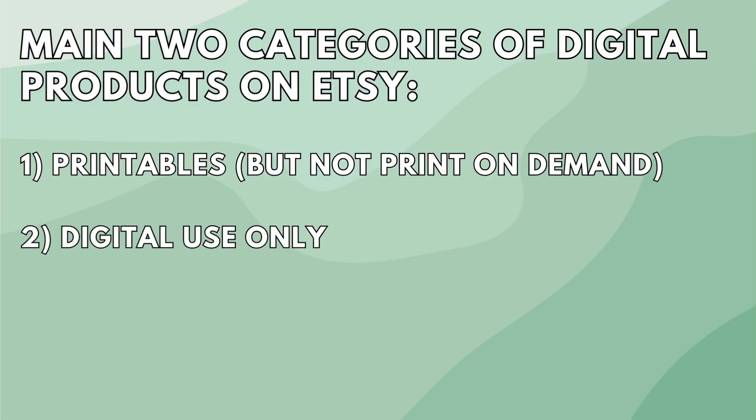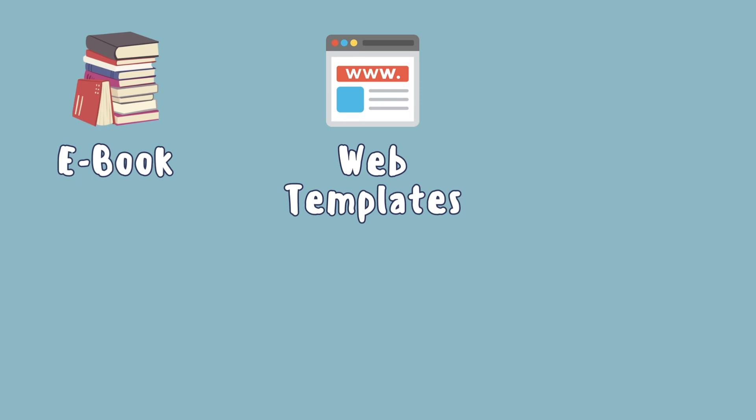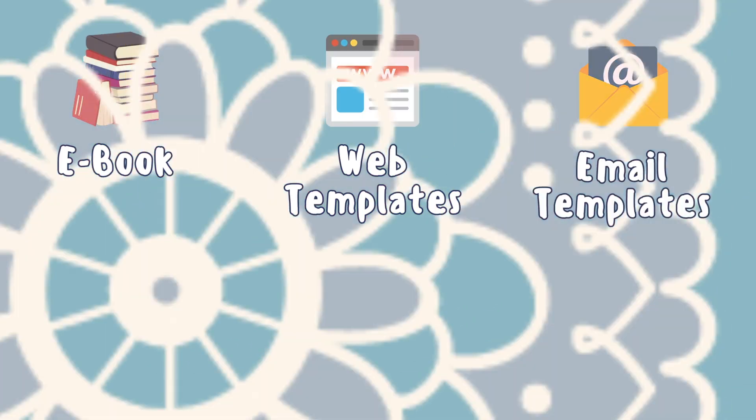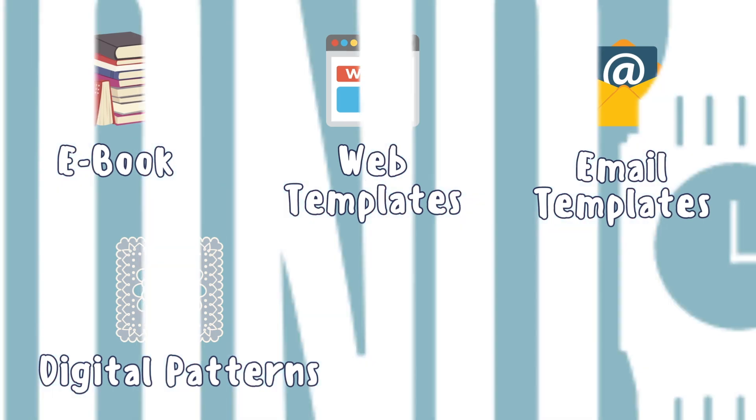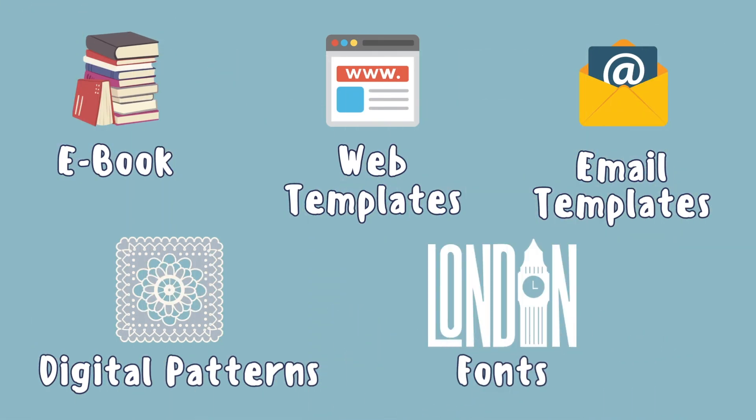The second category of digital products are items purely for digital use. For example, this would be stuff like ebooks, website templates, email design templates, digital patterns for things like crochet, and I've even seen some people selling very bespoke unique fonts on Etsy as well. There are plenty more digital items in both categories, but these are just the common ones that I see a lot of people selling with pretty good success on Etsy.